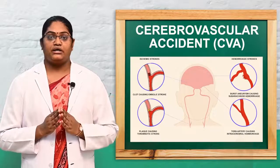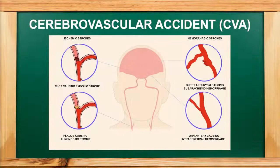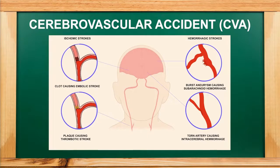The second type is hemorrhagic stroke, which occurs when there is leakage or rupture of a blood vessel in the brain. Hemorrhagic strokes are due to aneurysm and arteriovenous malformation. There are two subdivisions: subarachnoid hemorrhage, where bleeding occurs between the skull and brain, and intracerebral hemorrhage, where bleeding occurs within the brain. Hemorrhagic stroke accounts for about 50% of stroke cases and is responsible for 30% of stroke deaths.